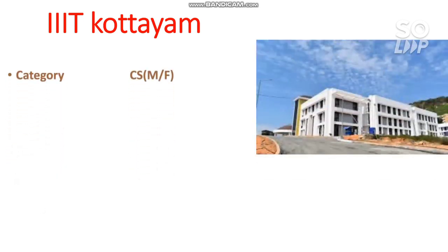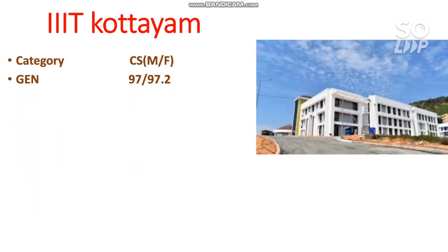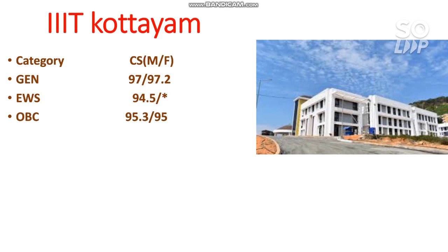The next is IIIT Gwalior. Here the cutoff is shown for both male and female. For General it is 97.0 for male and 97.2 for female. For EWS it is 94.5 and there is no seat reserved for female students, so females can also apply for the male reserved seats. For OBC it is 93 for male and 95.3 for female, for SC it is 75 and 78, and for ST it is 73 percentile.